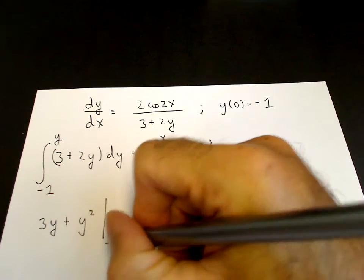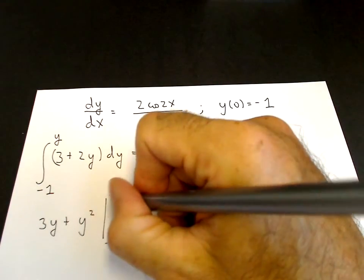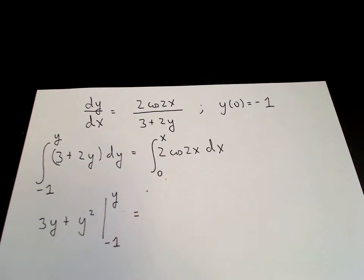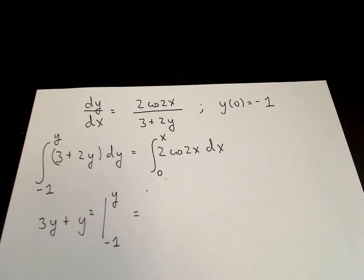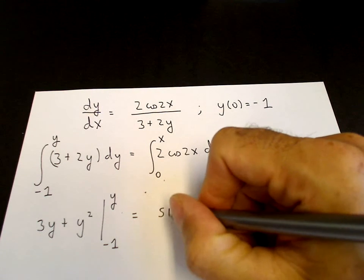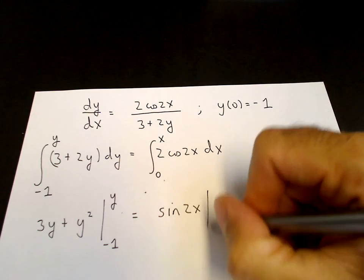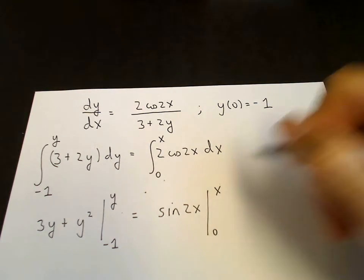3y plus 2y squared over 2 is y squared. We'll put in the limits, minus 1 to y. We integrate 2cos2x. You can do that by substitution. Or you can just recognize that the derivative of sin2x is 2 times cos2x. So the right-hand side is sin2x. And that goes from 0 to x.